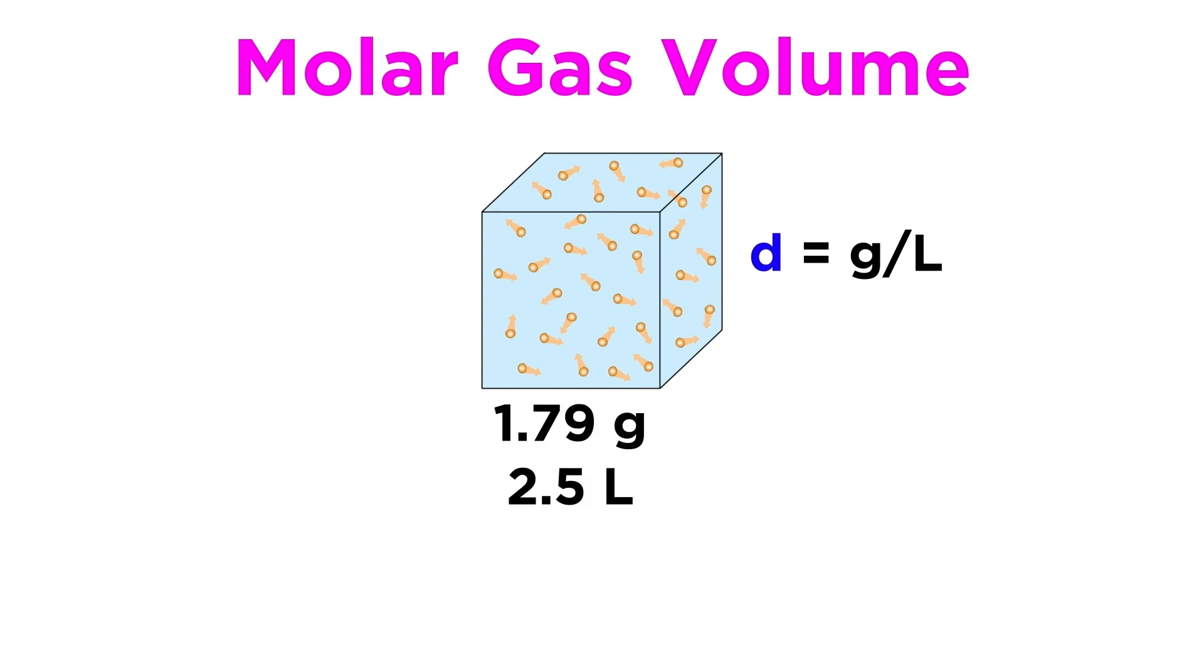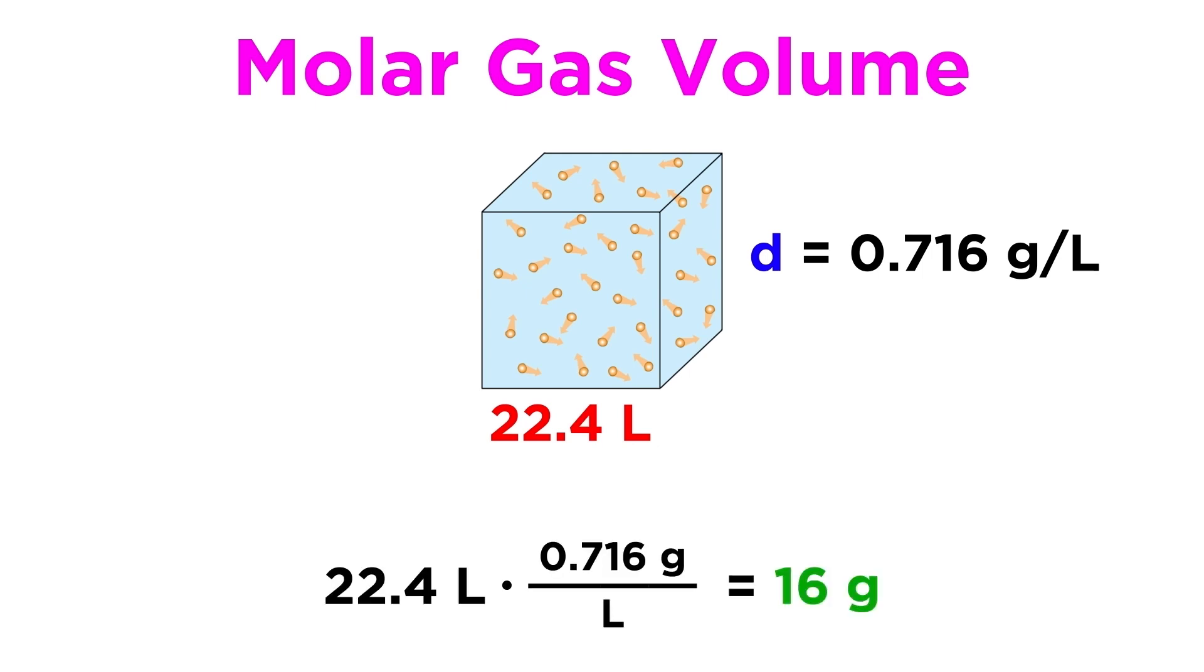For example, let's say you have some sample of gas, and you measure its mass as 1.79 grams, and it occupies precisely 2.5 liters. That means that the gas has a density of 0.716 grams per liter. Now we can apply what we know about the molar gas volume. What would the mass of this gas therefore be if the volume was 22.4 liters? Let's multiply by 22.4, and we get 16 grams for every 22.4 liters.